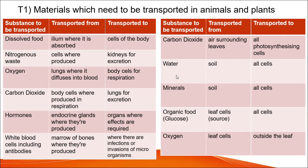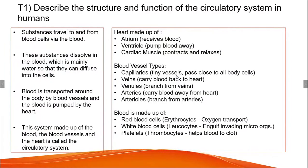Now looking at plants: carbon dioxide must be transported from the air surrounding leaves to all photosynthesizing cells. Water must be transported from the soil to all cells.